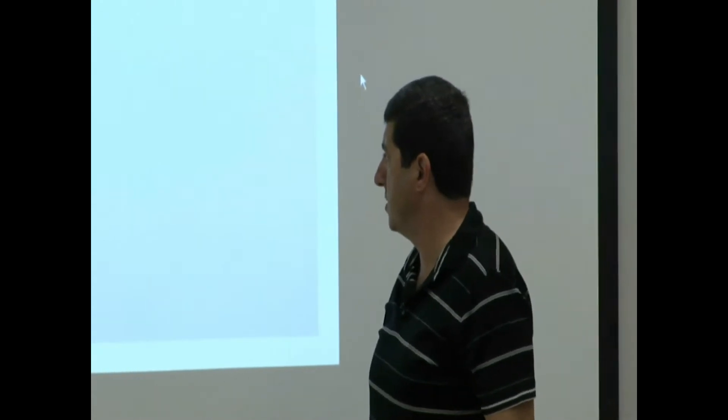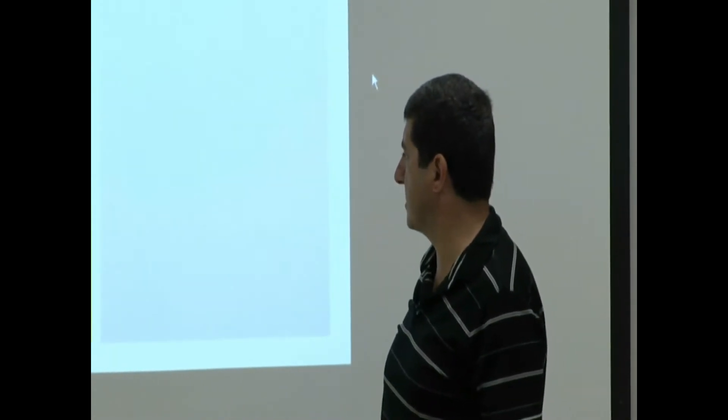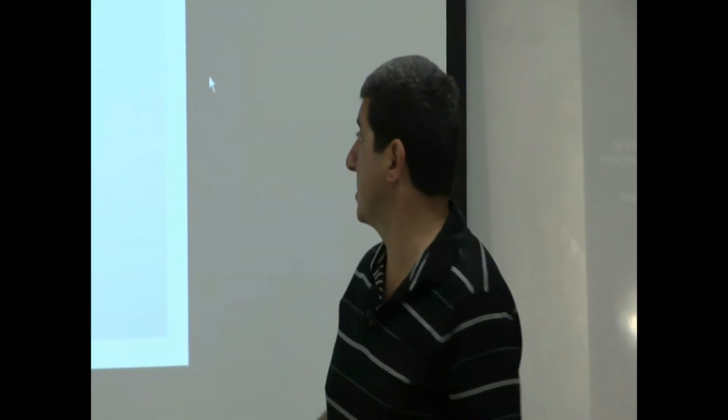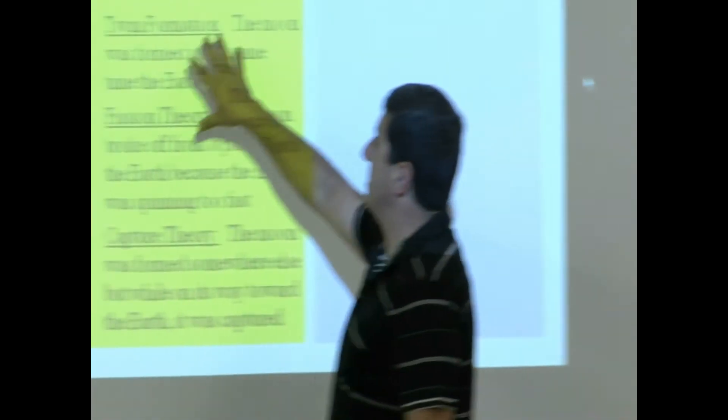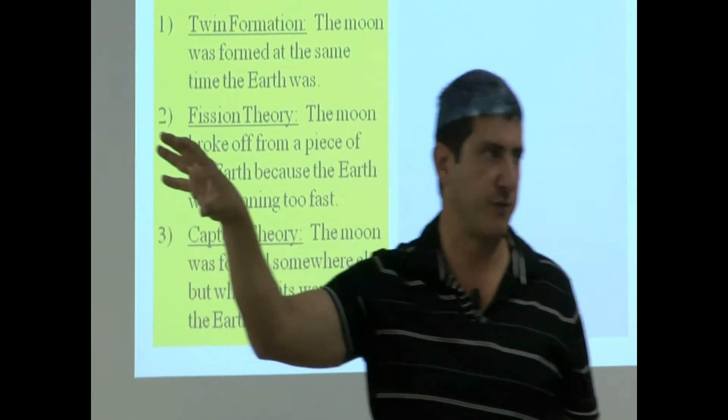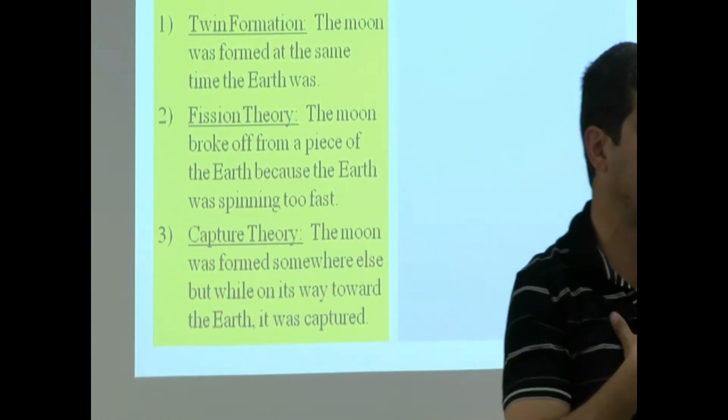Capture theory. The moon was formed somewhere else, but while on its way towards the Earth, it was captured. It's not true for our Earth. Now see, these are basically theories that are laid, put out there. It might be true about other planets' moon's formation, but it's not true about our moon.